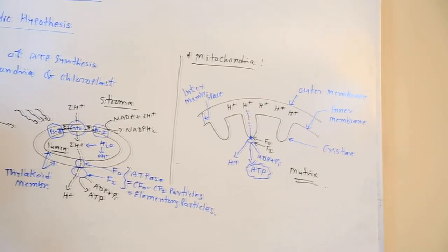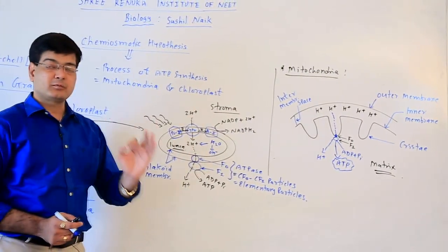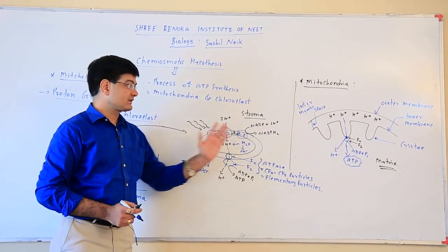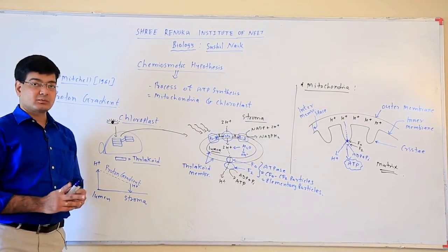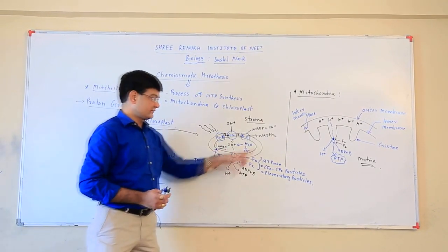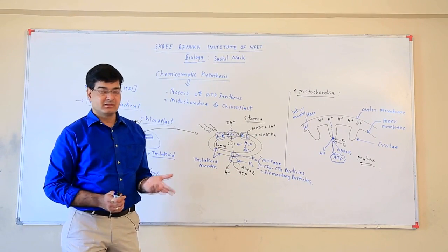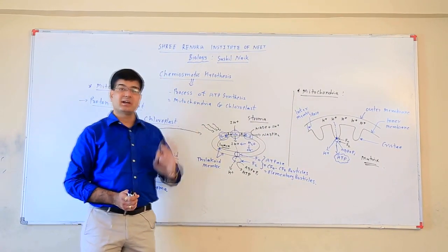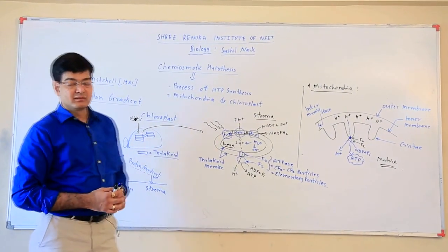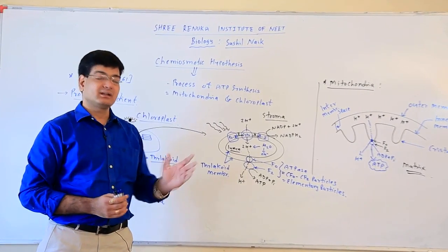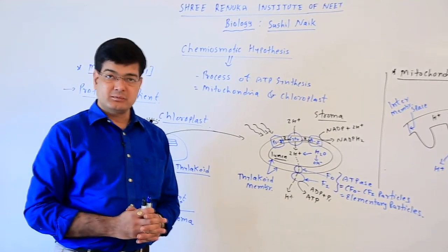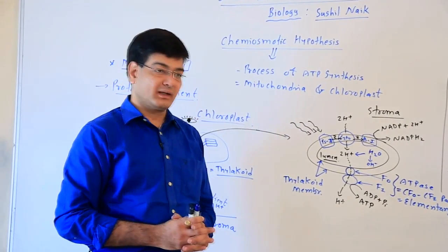In both chloroplast and mitochondria, the breaking of the proton gradient is mainly responsible for ATP synthesis. This theory is called the chemo osmotic theory because H+ ions are the chemicals, and their rapid diffusion is a kind of osmotic process. In the next session we will discuss questions regarding the chemo osmotic hypothesis, and you can write to me with any doubts. Thank you very much.